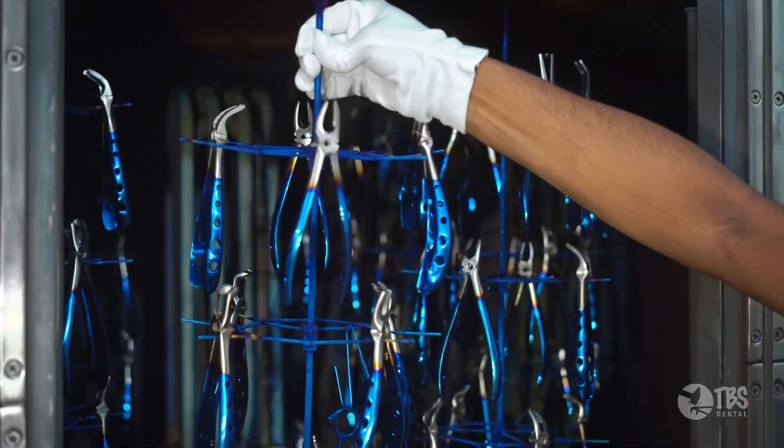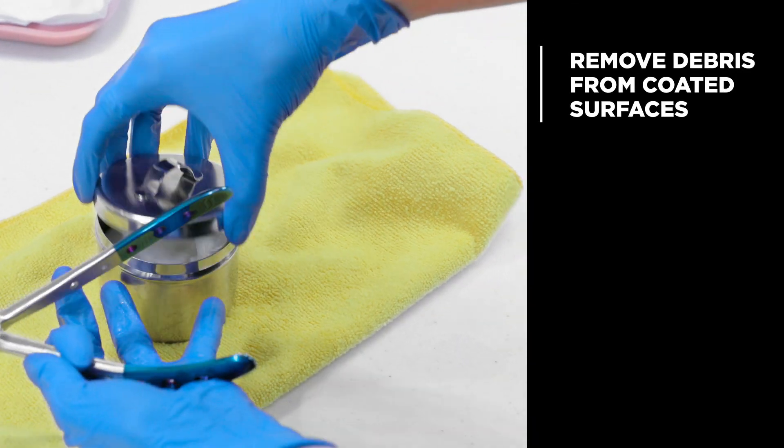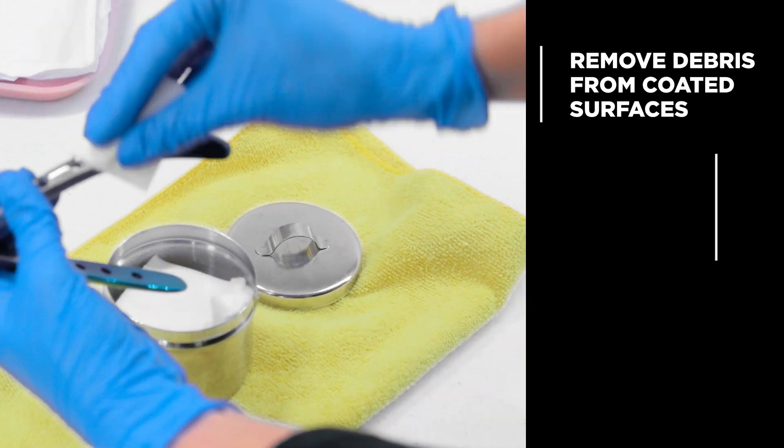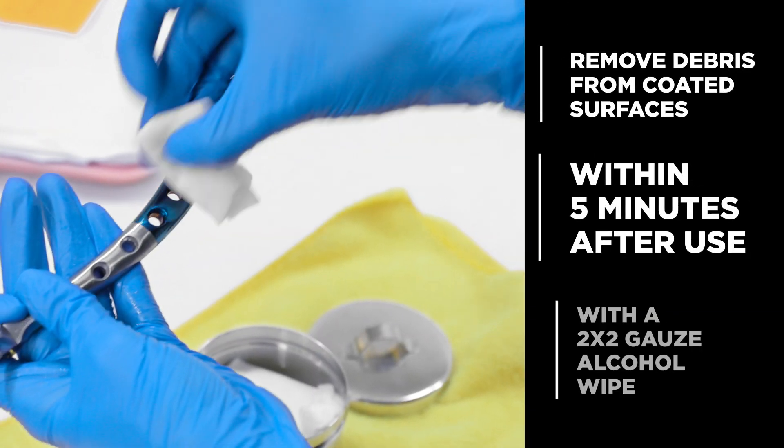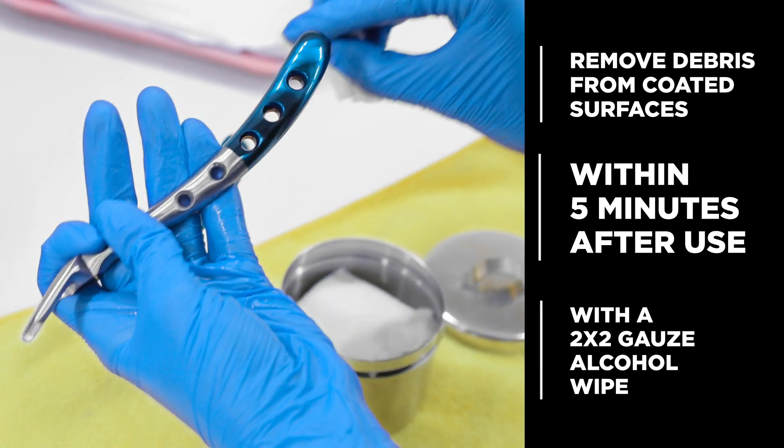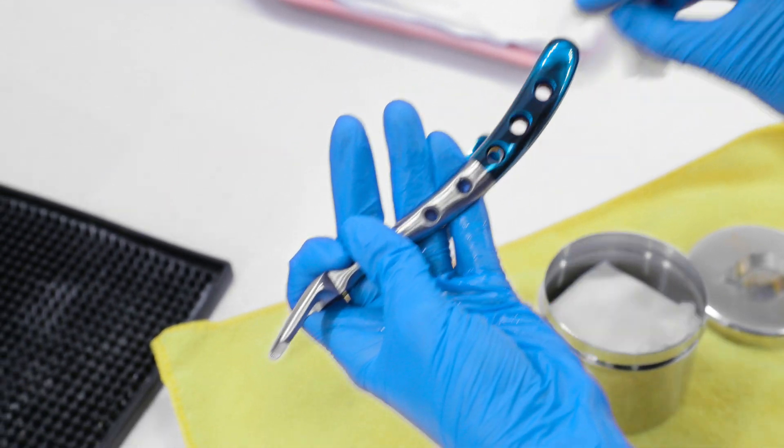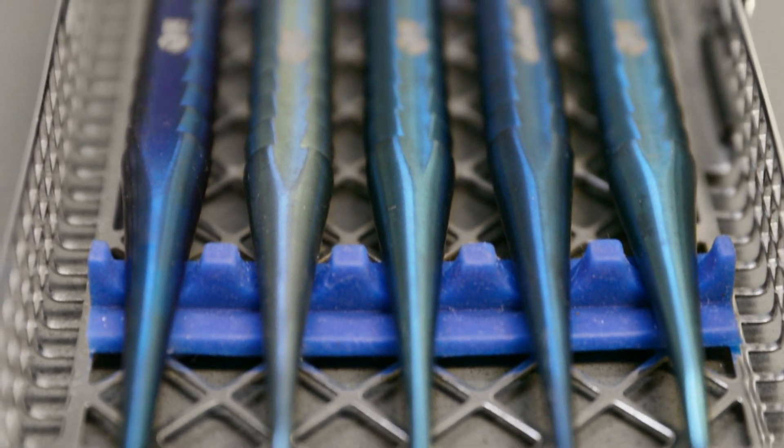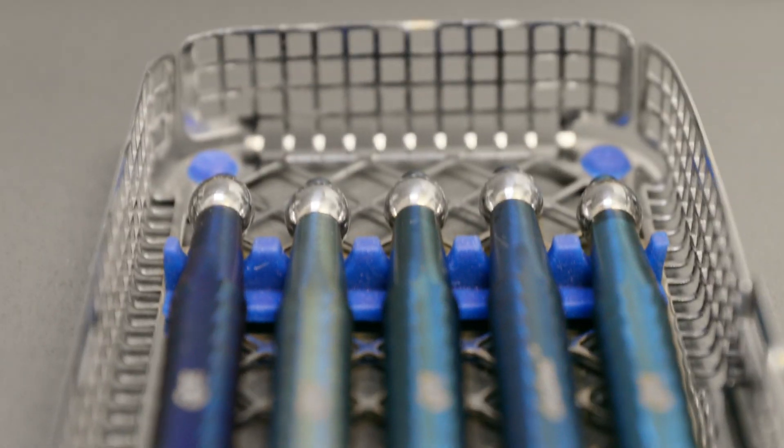Proper care should be taken to remove any residual composite materials from the blade within 5 minutes after use by wiping the coated area with alcohol on a 2x2 gauze. Composite materials or residue can harden on the coated area and affect the quality of future restorations.